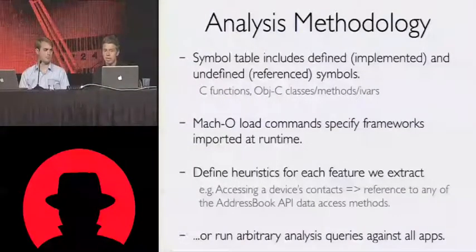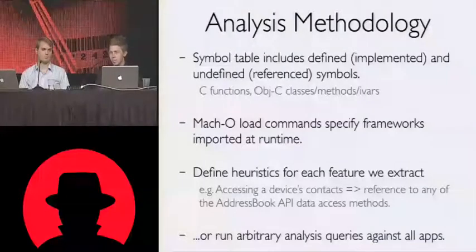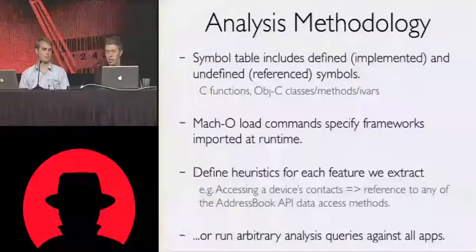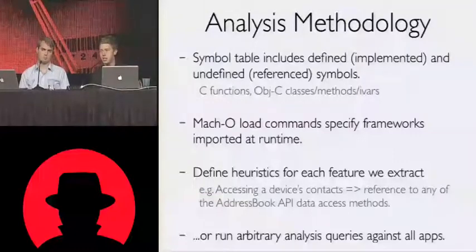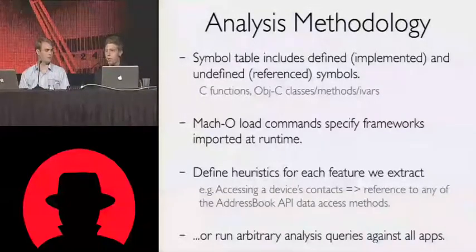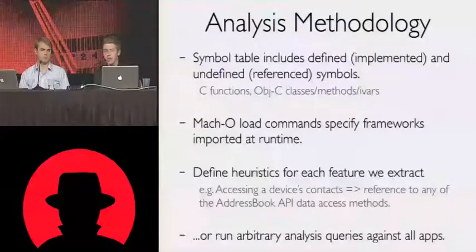Specifically, we're looking at the symbol table, which tells us defined symbols — which are implemented symbols. So if a symbol is defined, it's a class that your application has. If a symbol is undefined, it's a class that your application references — it may be a framework API. This is true for C functions as well as Objective-C classes, methods, and instance variables. Objective-C is a strict superset of C, so everything compiles down to C and it plays really nicely — we're not doing a VM here.